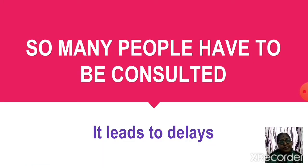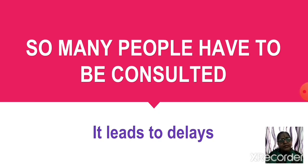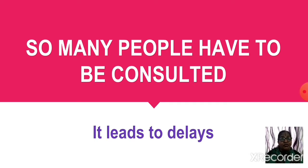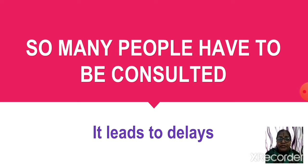The next argument against democracy is that so many people have to be consulted, and it leads to delays. In a democracy, many people are consulted. When India's constitution was framed, there were lots of debates and discussions and it took nearly three years. Decisions are not taken overnight — debates take time and so decisions are delayed.